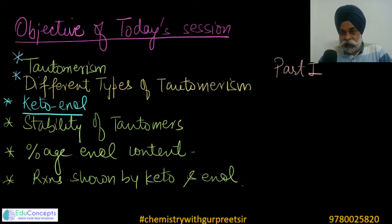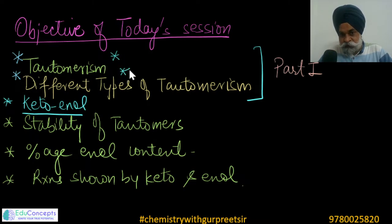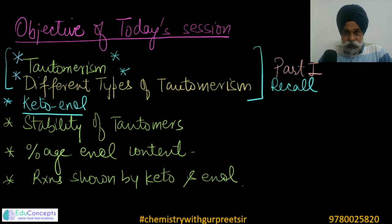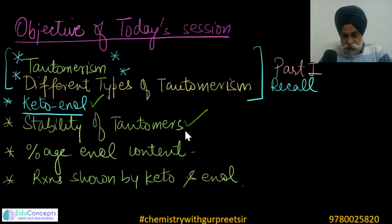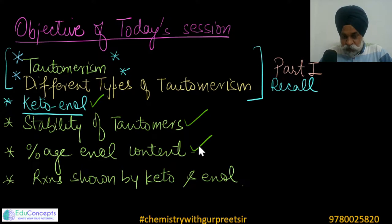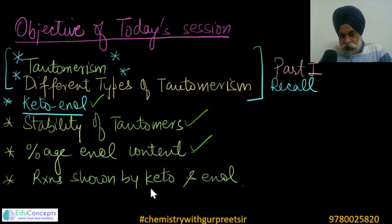The objective of today's session: we already covered tautomerism and its types in part one. For those joining for the first time, I'll give a brief recall. Today's session will address keto-enol tautomerism in detail, stability of tautomers — which is more stable and why — how percentage enol content can be checked conceptually, and reactions based on individual functional groups as keto and enol.